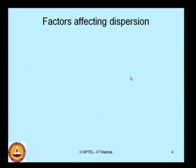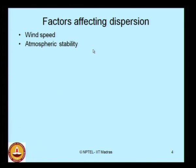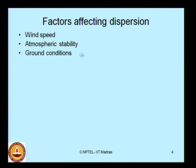What are the factors that affect dispersion? The foremost factor is wind velocity or downwind speed. The next is atmospheric stability, which we will discuss in detail. The third is terrain conditions — the nature of the surface where dispersion takes place: whether it is a rough surface, open water body, open ground, or contains tall buildings. Depending upon the ground condition, the dispersion model is affected.